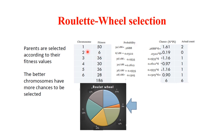Individual 1 has the highest probability and occupies the largest surface of the wheel. The wheel is divided into 6 sectors corresponding to the 6 individuals. Individual 1 occupies 27% of the wheel, individual 2 occupies only 3%, individual 3 occupies 19%, individual 4 occupies 16%, individual 5 occupies 19%, and individual 6 occupies 15%.